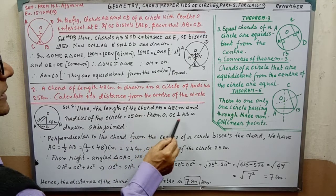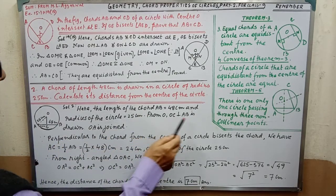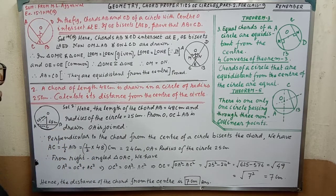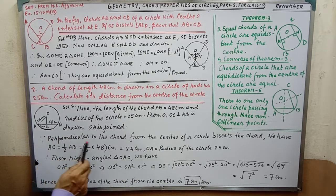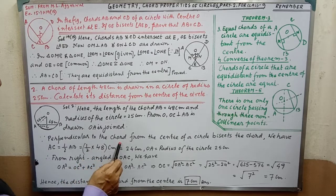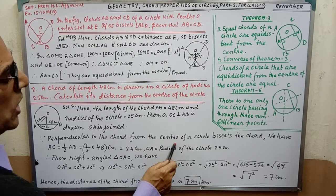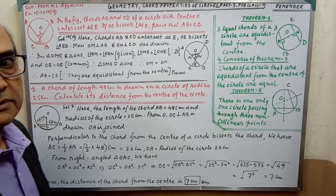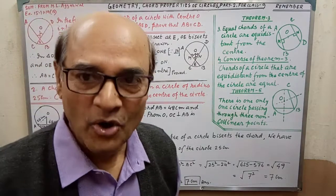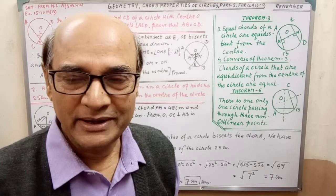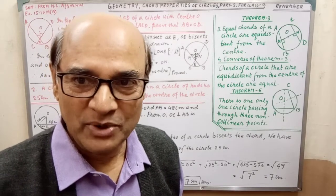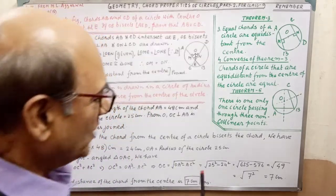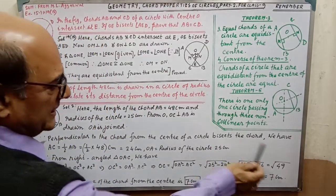From O, OC perpendicular to AB, perpendicular to AB is drawn. OA is joined. Since the perpendicular to the chord from the center of a circle bisects the chord, that theorem you have got in Part 1. You must go to the Part 1 video, otherwise you will feel difficulties to understand this sum.